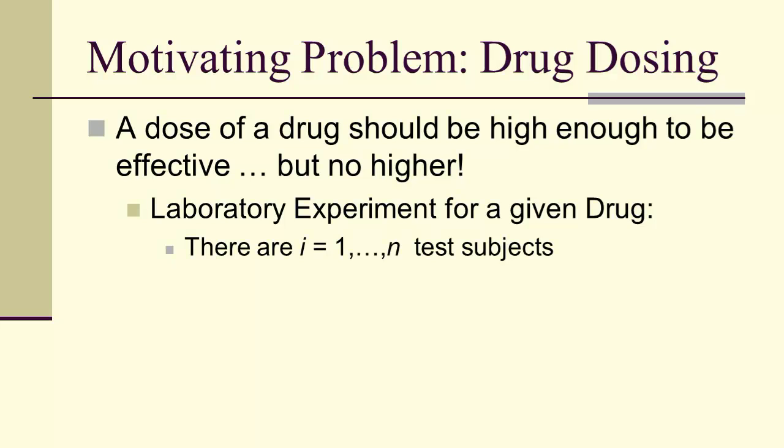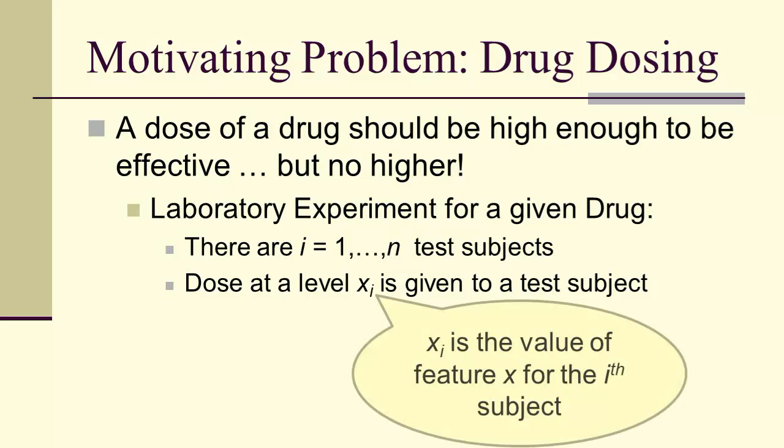So let's suppose we have an experiment for a given drug. There are N test subjects. And the dose at level x sub i is given to a test subject.